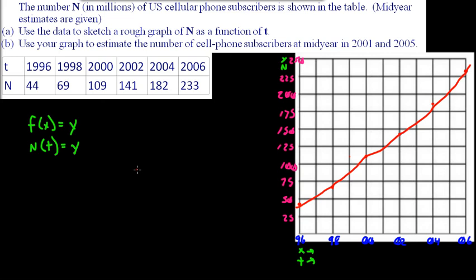And for part B, it says use your graph to estimate the number of cell phone subscribers at mid-year in 2001 and 2005. So you come over here, here's 2001, and you just go up here, and it's going to be right in here, roughly about 125.